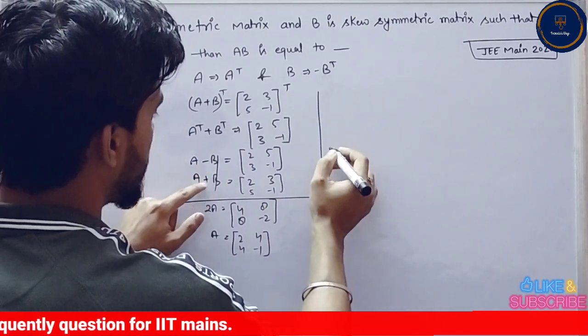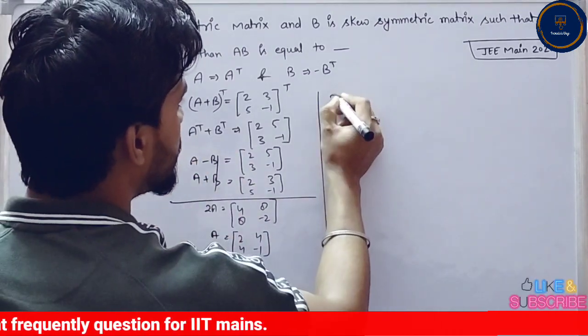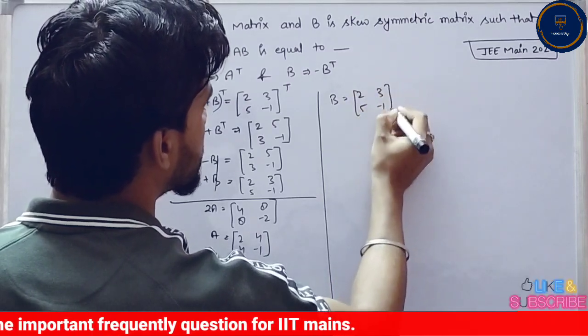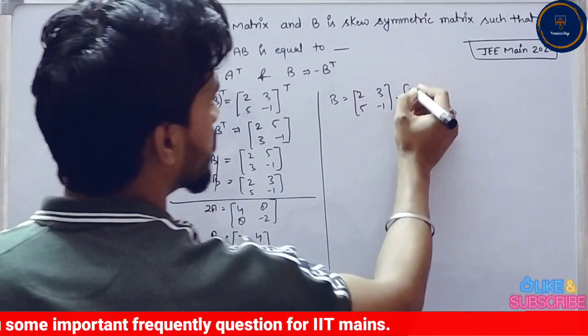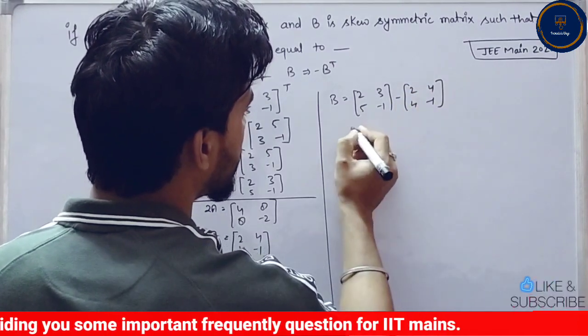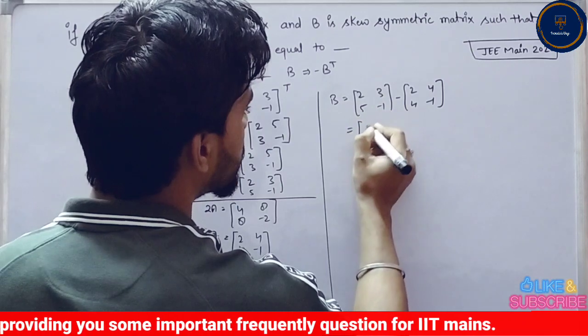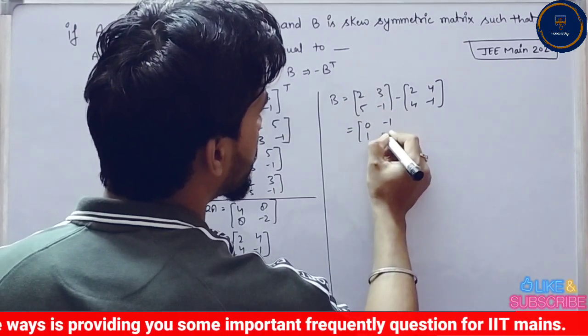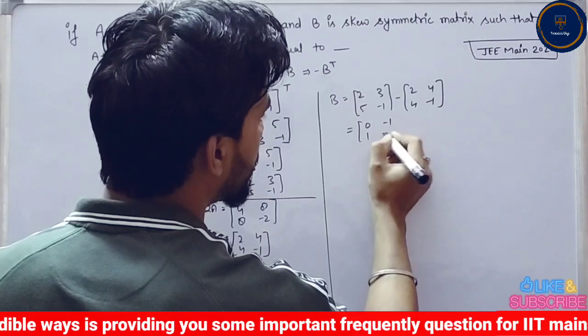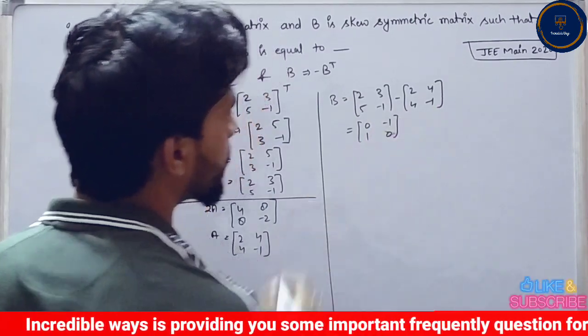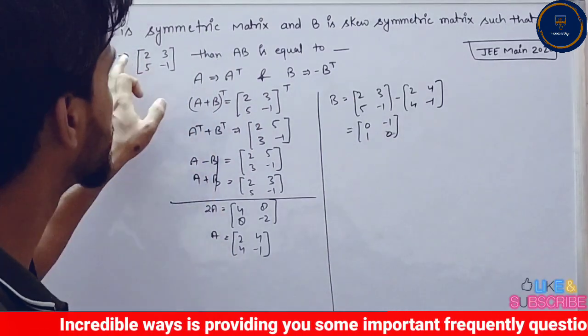If we have A, then what is B? B will be A minus this. B is equal to [2, 3; 5, -1] minus [2, 4; 4, -1]. This gives B equals [0, -1; 1, 0]. B is this.